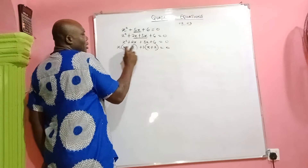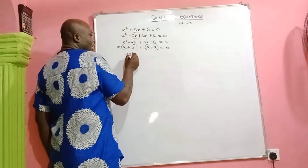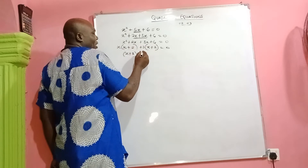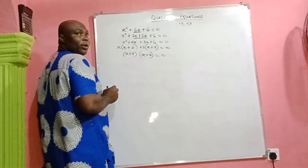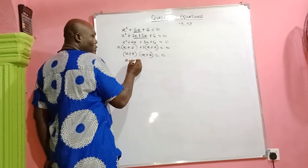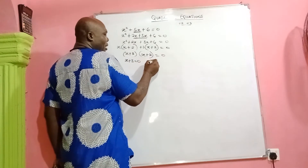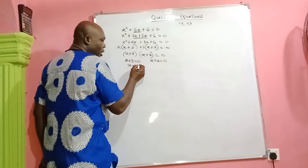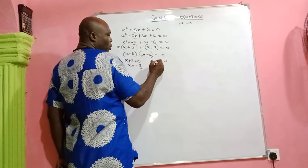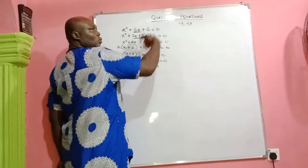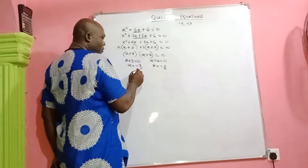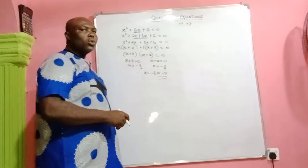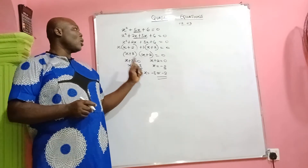We now have the factors (x + 3)(x + 2) = 0. It means that x + 3 = 0 or x + 2 = 0. If x + 3 = 0, then x = -3. And if x + 2 = 0, then x = -2. Therefore, the roots of the equation are x = -3 or x = -2. Those are the roots of the quadratic equation.